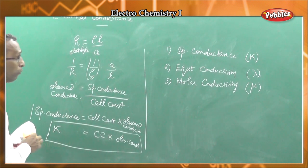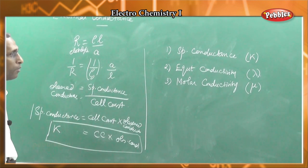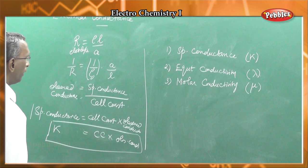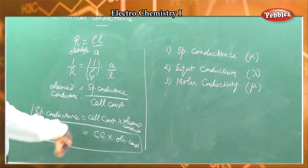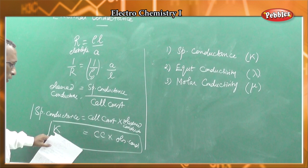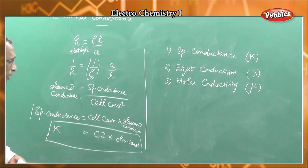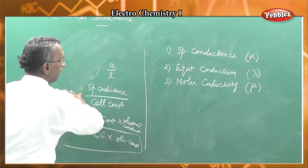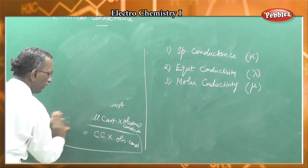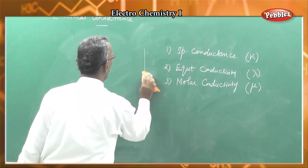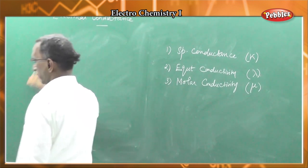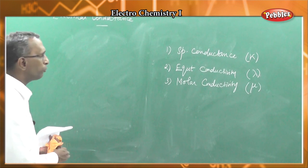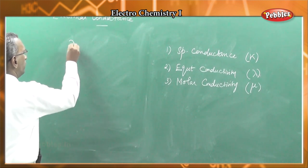Specific conductance is defined as the conductance offered by unit volume of the electrolyte. Unit volume is 1 cc — that is, 1 centimeter cube. So the conductance of 1 cc of the electrolyte is the specific conductance. Conductance is the reciprocal of resistance, that is to be noted.